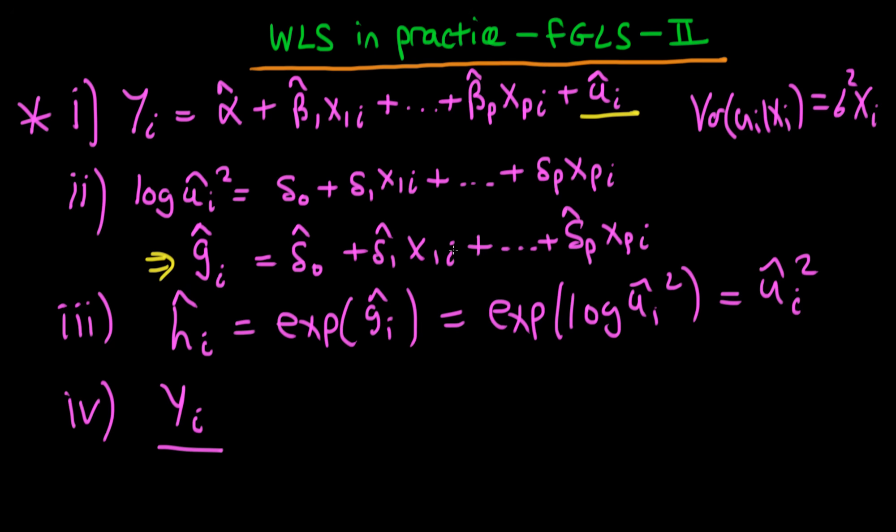But now we don't actually have this simple form of the variance, but we do have this estimated variance which we've got here given by ĥᵢ. So much like the case where we actually knew the variance explicitly,